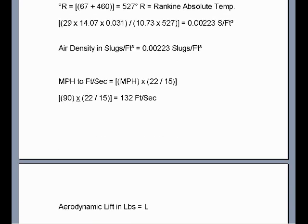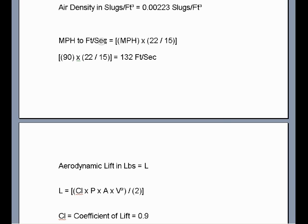Next thing we do is we take the miles per hour, we convert it to feet per second. That's simply 22 to 15 fractional ratio times miles per hour. So 132 feet per second is equal to 90 miles per hour.